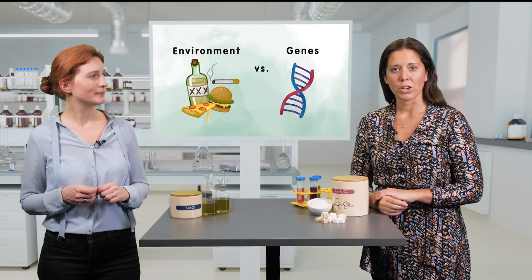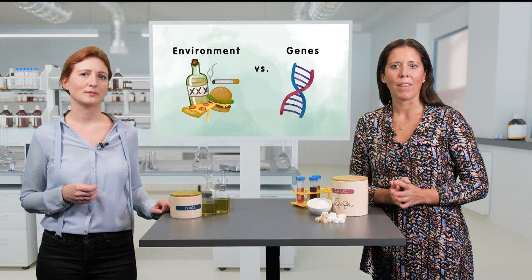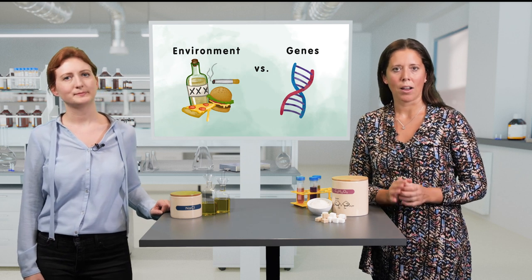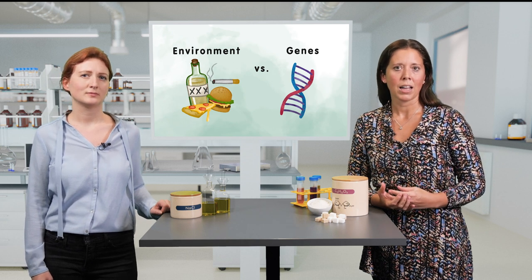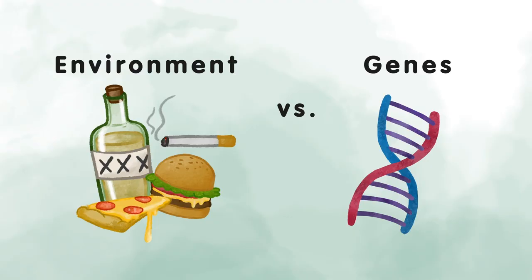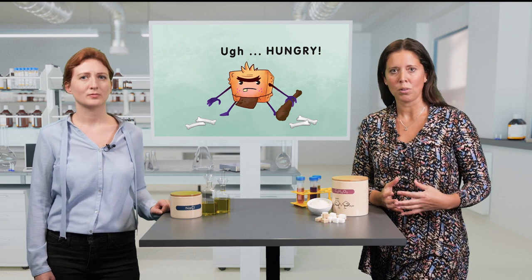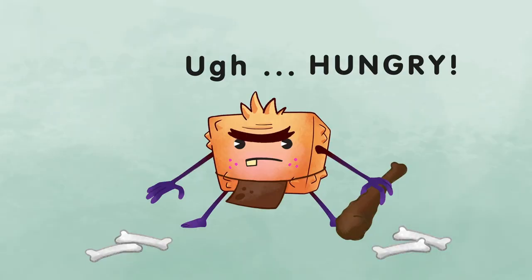Before we dive into the role of our genes in the development of the metabolic syndrome, let's have a closer look into the environment that favors the development of the disease. Many of the symptoms like overweight and obesity or type 2 diabetes have their origin in our lifestyle and more so in the environment that we live in. Because of our evolutionary past, where we had to survive over stretches of low food availability, we are designed to live as energy efficiently as possible in order to conserve energy for times when food is not available. This increased the chances of survival for our ancestors.